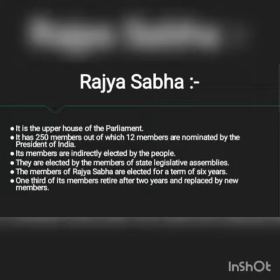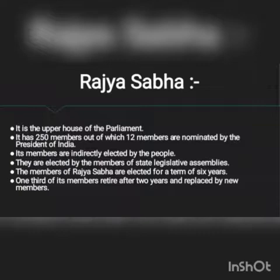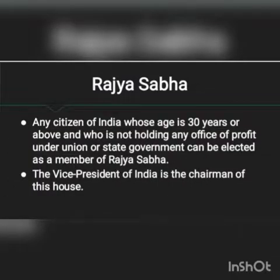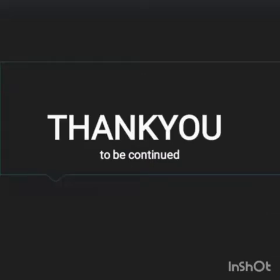Rajya Sabha is the Upper House of the Parliament. It has 250 members, out of which 12 members are nominated by the President of India. Its members are indirectly elected by the people — they are elected by the members of State Legislative Assemblies. The members of Rajya Sabha are elected for a term of 6 years. Any citizen of India whose age is 30 years or above and who is not holding any office of profit under the union or state government can be elected as a member of Rajya Sabha. The Vice President of India is the Chairman of Rajya Sabha.